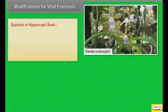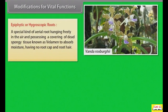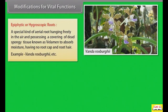Epiphytic or hygroscopic roots are a special kind of aerial root hanging freely in the air and possessing a covering of dead spongy tissue known as velamen, to absorb moisture. They have no root cap and root hairs. Examples: Vanda, Rorx, Berge, etc.